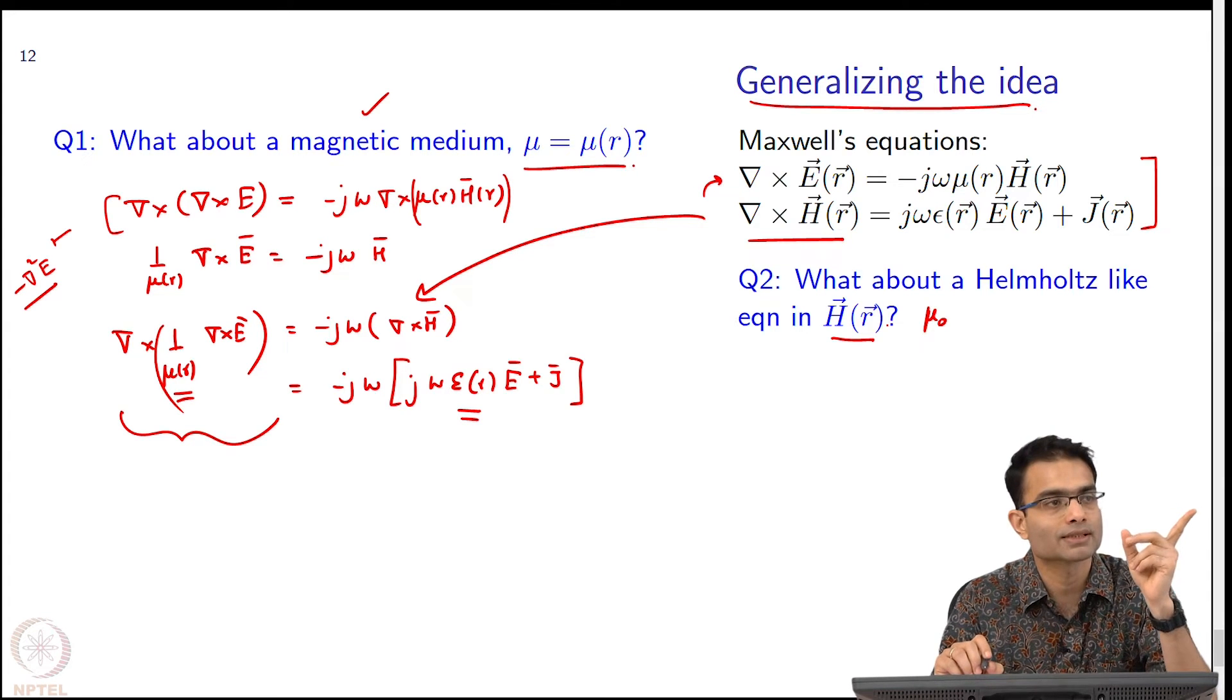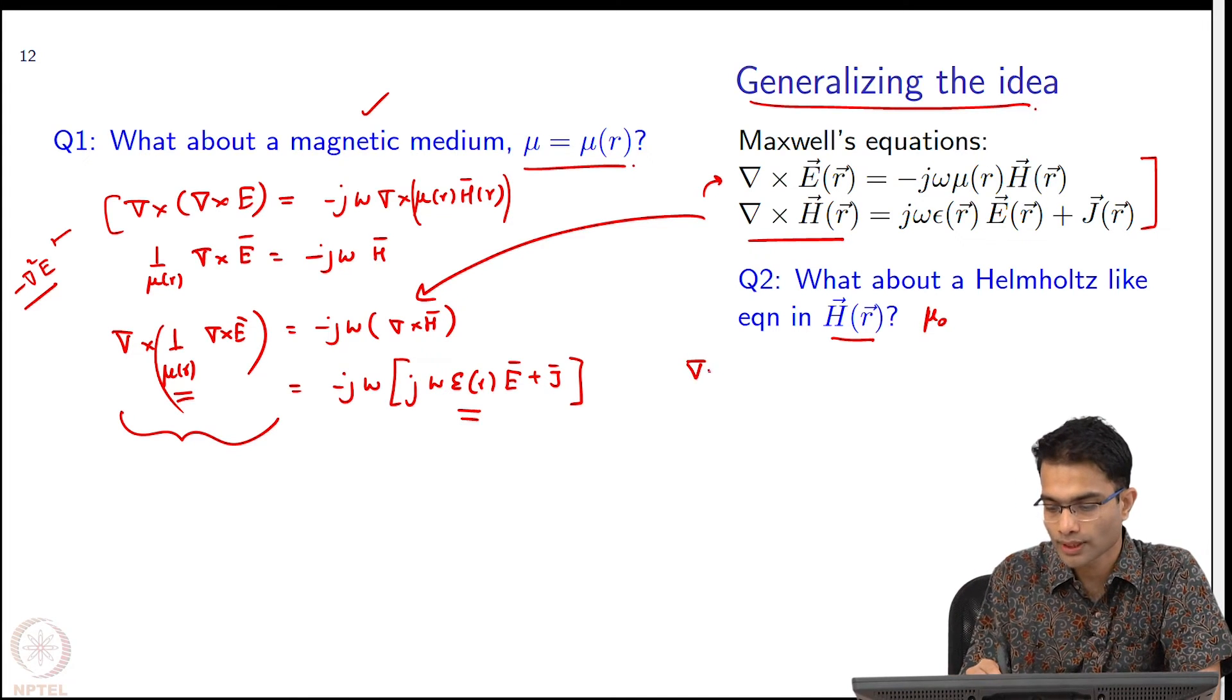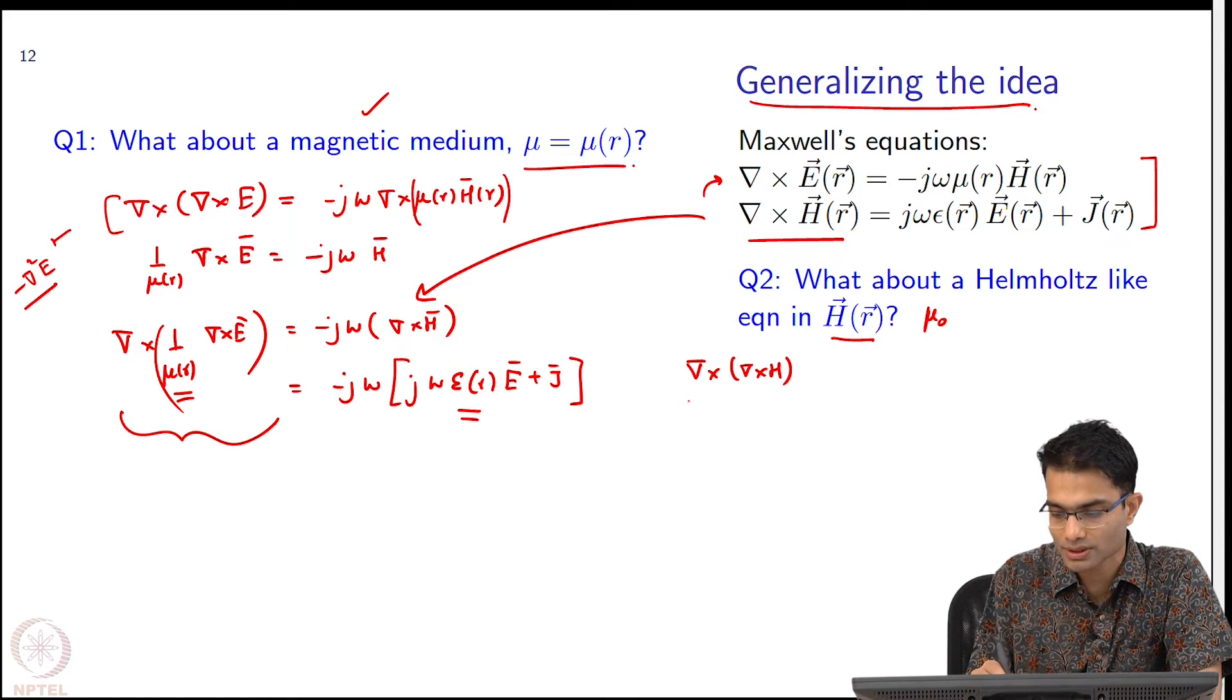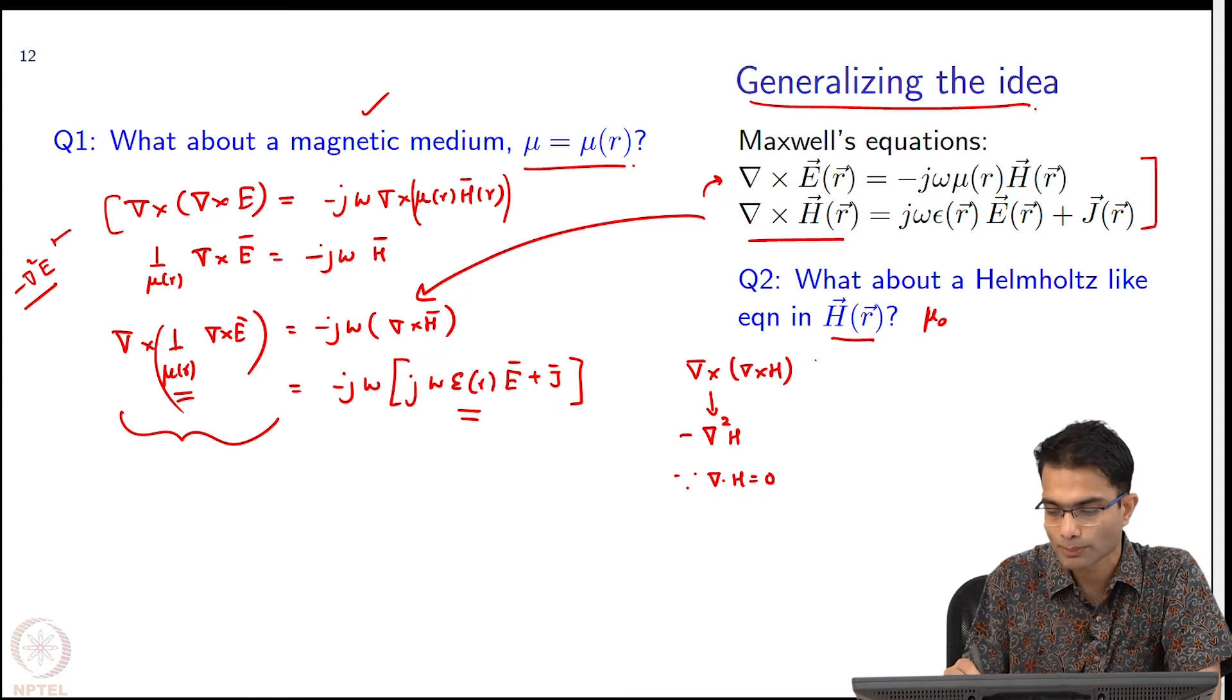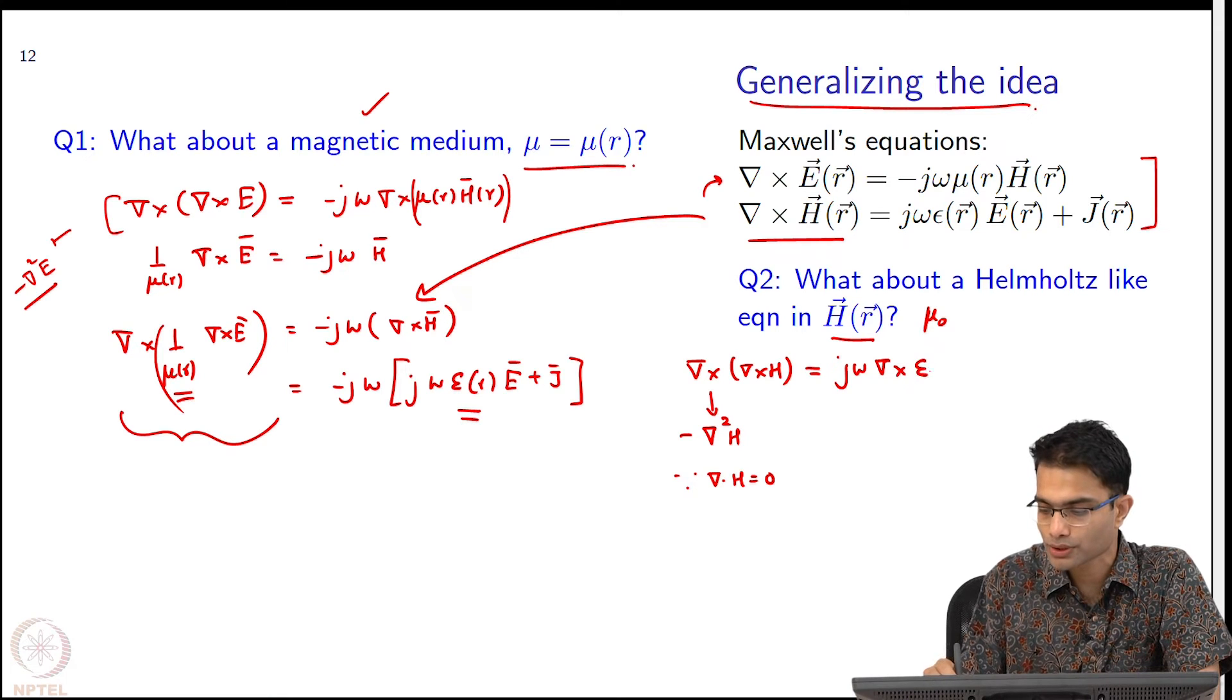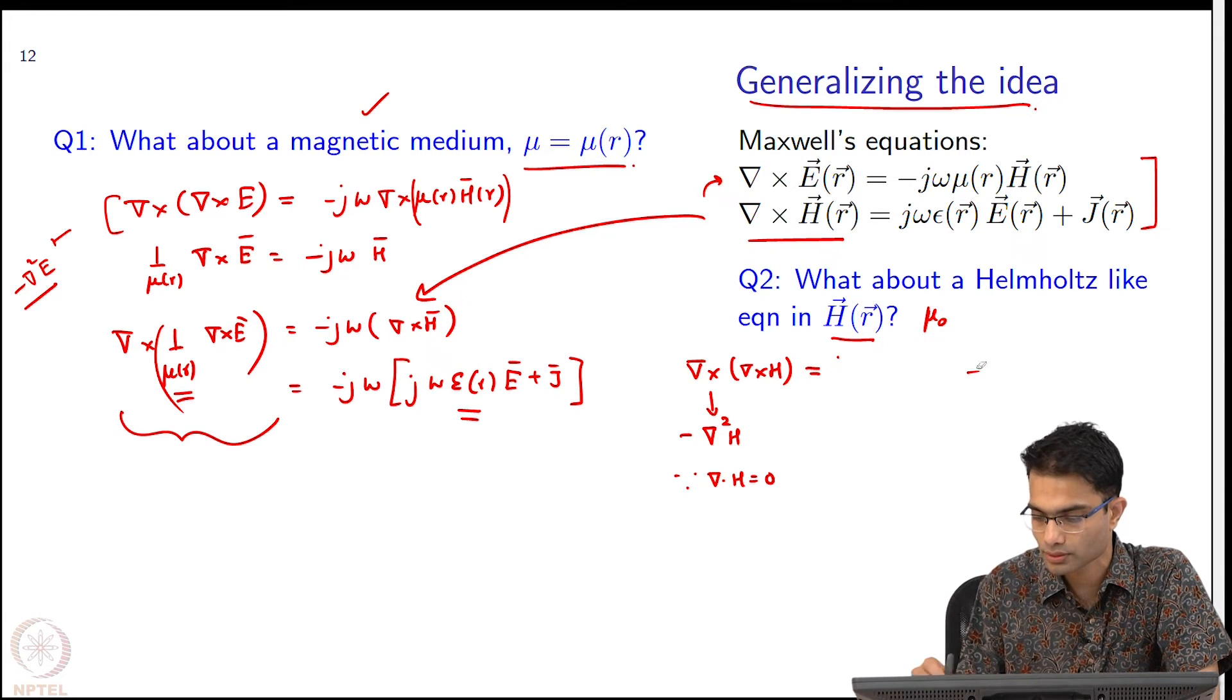I have one answer that says yes, anyone else? So, if I do I have to do this right, del cross H, that is what I have to do and since mu naught is just constant then this would give me minus del squared H because del dot H is equal to 0.